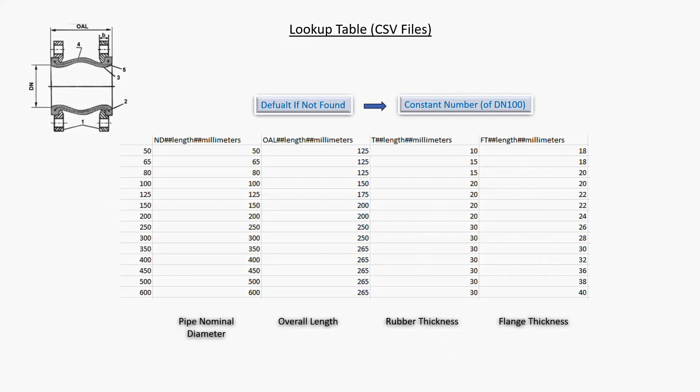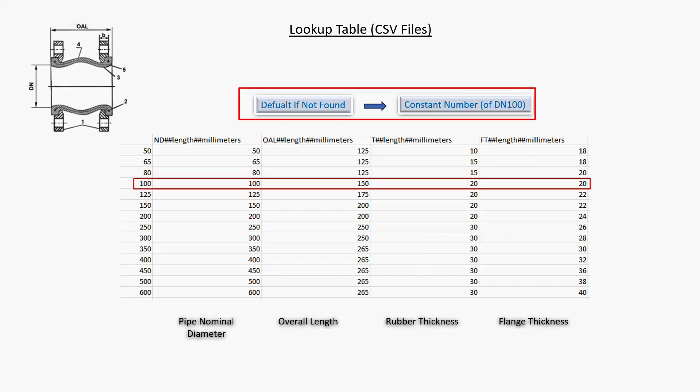This is the lookup table CSV file. Its data are referred from the manufacturer specifications. I will use this lookup table CSV file to create the parametric family. There are DN50 to DN600. I will use this formula for the default 'not found' case.